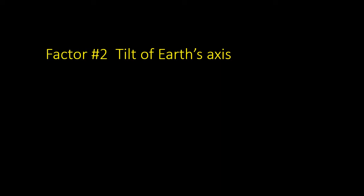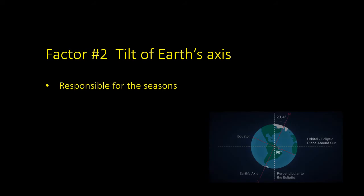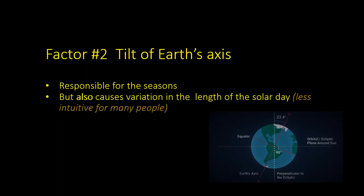The second factor which affects the length of the solar day is the tilt of the Earth's axis. Many, if not most, people know this tilt causes the seasons, but at first sight it isn't immediately clear why the tilt should also cause the length of the solar day to vary, and many people struggle to visualize this. I'll talk about this next and I hope my explanation is easy to follow.